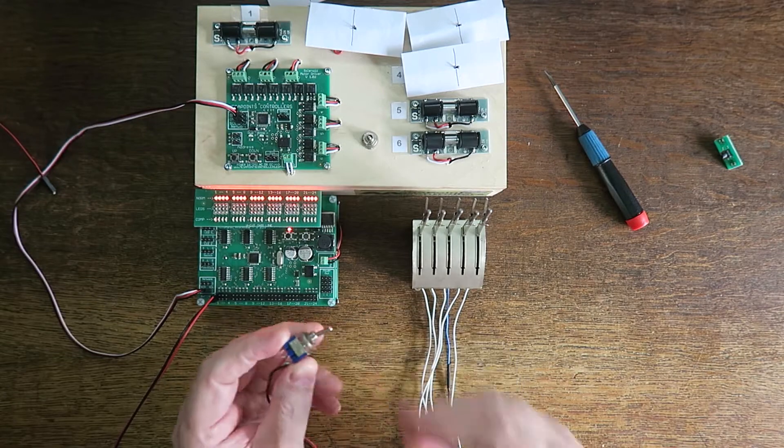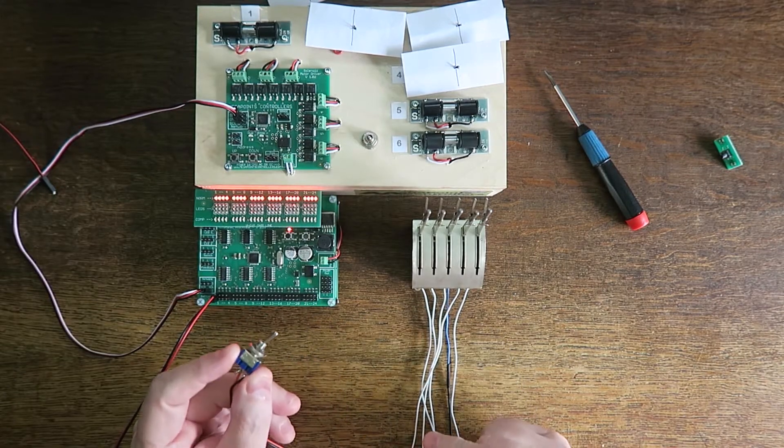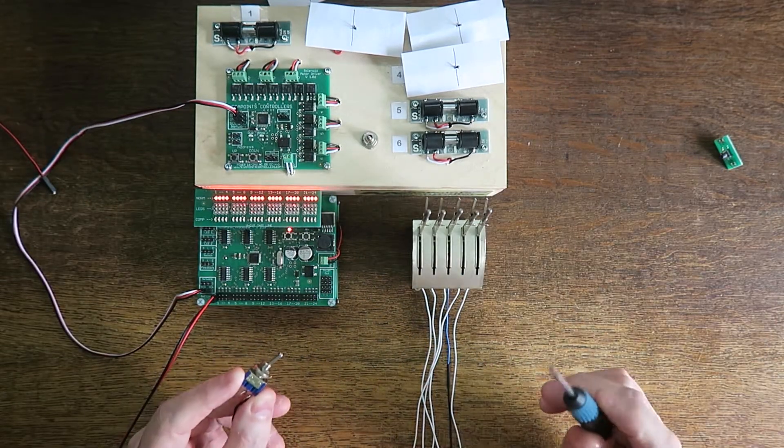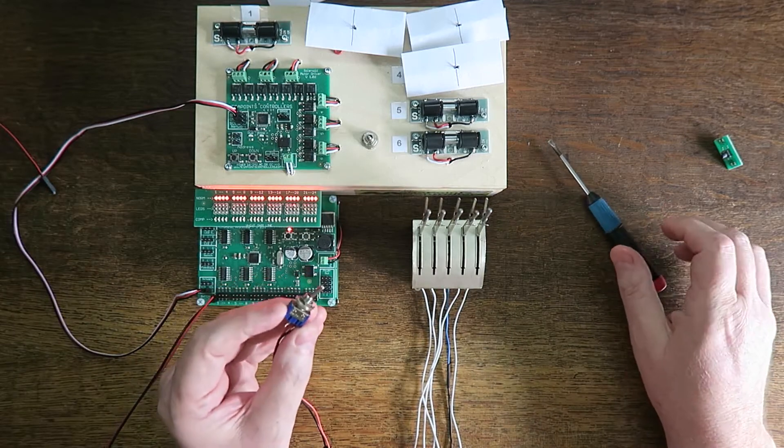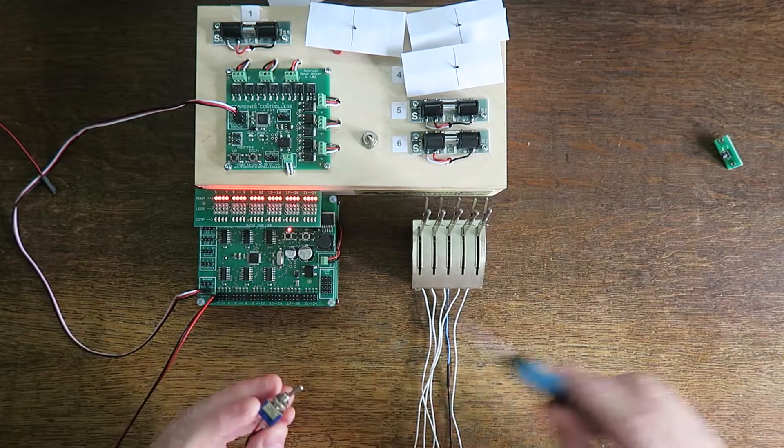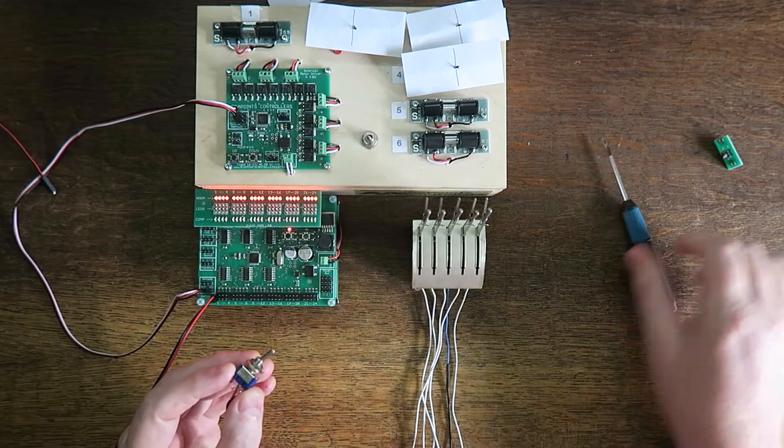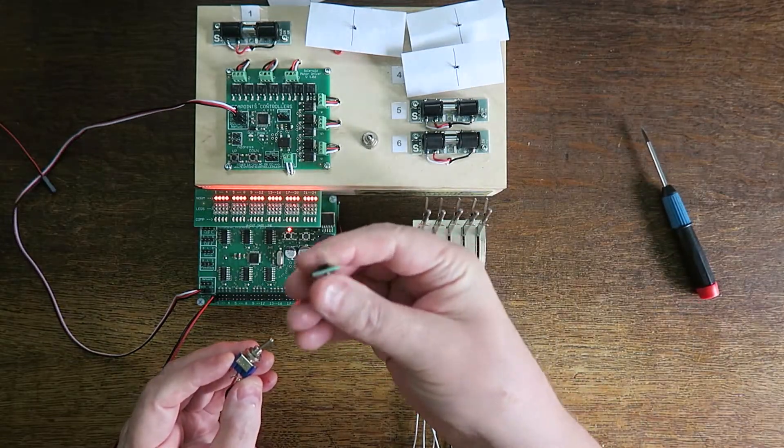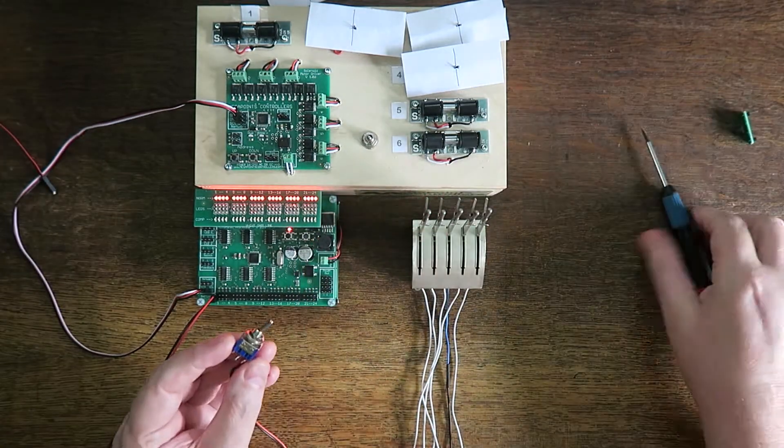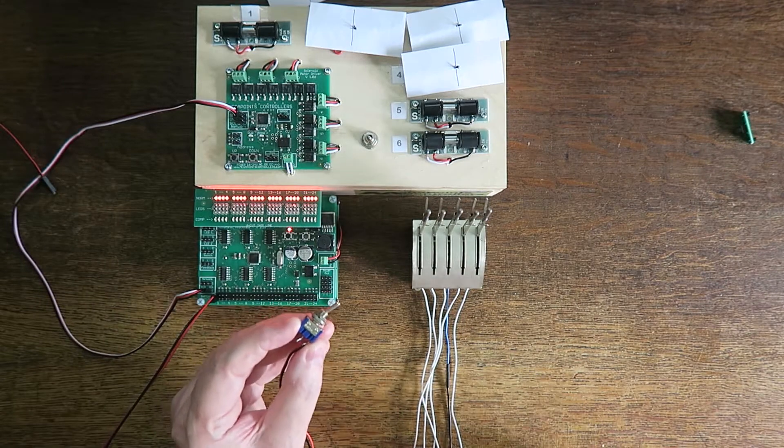To work around this, what we do is we set up lever mode on the multi-panel, and what we're essentially doing is telling the multi-panel we don't want the electronics to control the state when we toggle it with a switch. We want the switch itself to set the state.